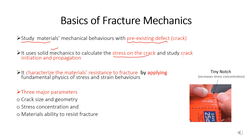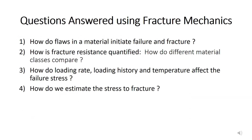Three major parameters studied in fracture mechanics are: crack size and geometry — what is the size and dimensions of the crack; stress concentration — at a particular crack, what is the amplitude of stress at that point; and the material's ability to resist fracture. Questions generally answered using fracture mechanics include: how do flaws in a material initiate failure and fracture? We assume there is a pre-existing crack and study how that crack will initiate failure and lead to fracture of the material or component.